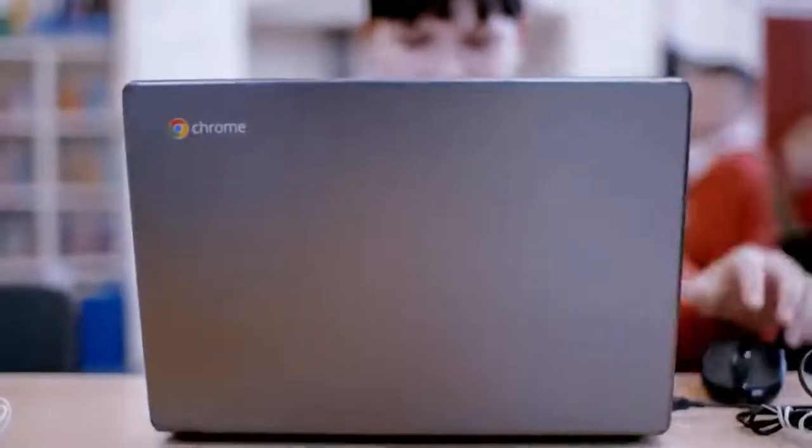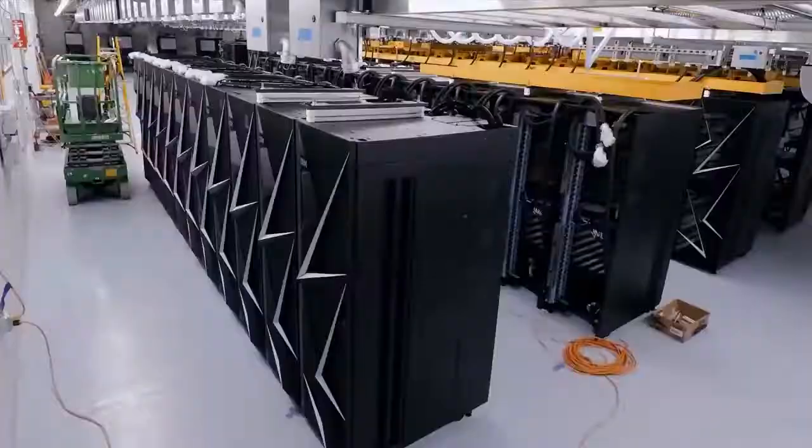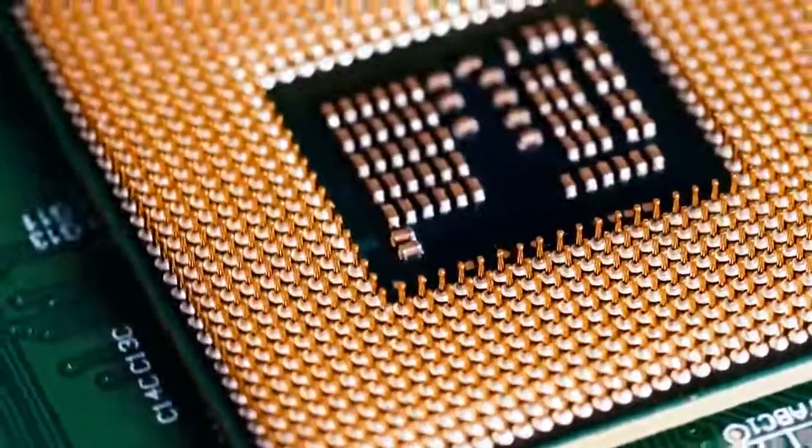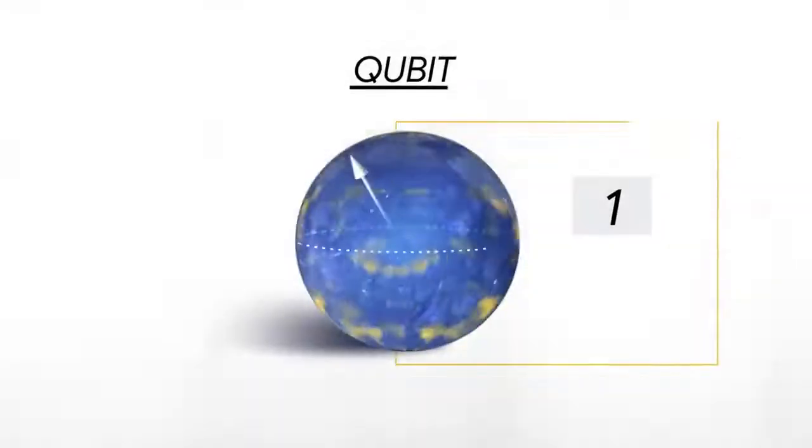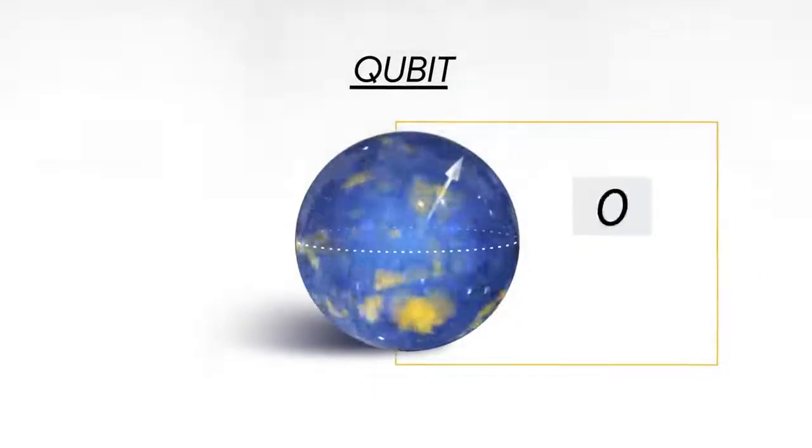The word quantum computer is a little bit misleading because it sounds like a computer, and when people think of a computer they think of a phone or a laptop. The truth is the phone, the laptop, and even a very powerful supercomputer all operate according to the same fundamental rules — a quantum computer is fundamentally different. The classical bit stores information as a zero or one, and a quantum bit can be both zero and one at the same time.